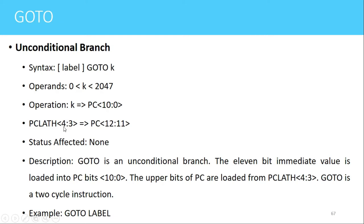Using those two bits from PC LAT register, the page of memory will be decided. As we know, the program memory has four different pages: page 0, page 1, 2, and 3. Which page is to be selected is decided using these two bits — bit number 4 and bit number 3 of the PC LAT register. These two bits are loaded to bit number 12 and bit number 11 of the program counter.